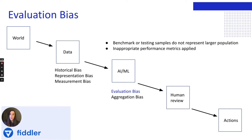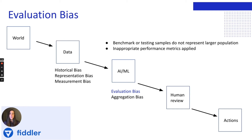Evaluation bias occurs during model iteration and evaluation. A model is optimized on training data, but its quality is often measured on benchmarks. Bias can arise when testing or benchmark samples do not equally represent various parts of the larger population. It can also arise from performance metrics that are not appropriate for the way the model will be used. An example of this is the benchmarks used in the development of facial recognition systems, which did not represent the general population.